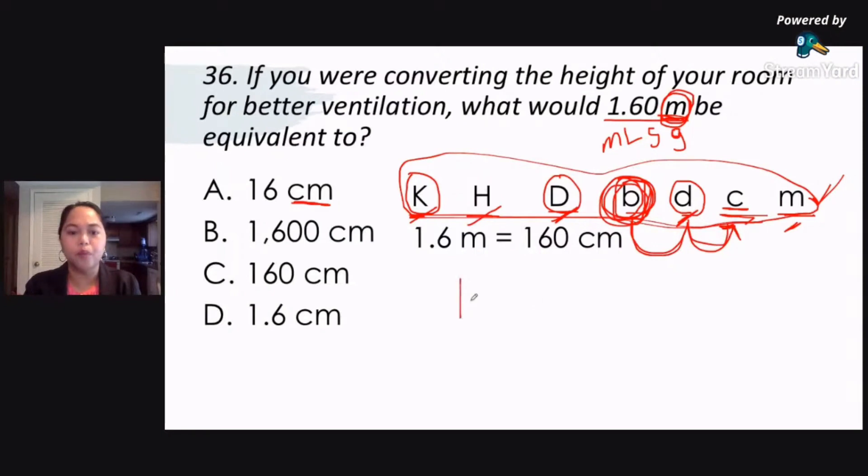So, from 1.6 meters, imumove mo po tong decimal point mo twice din to your right. So, 1.60. You supply a zero here since there should still be a space. So, your answer there would be letter C, 160 centimeters.